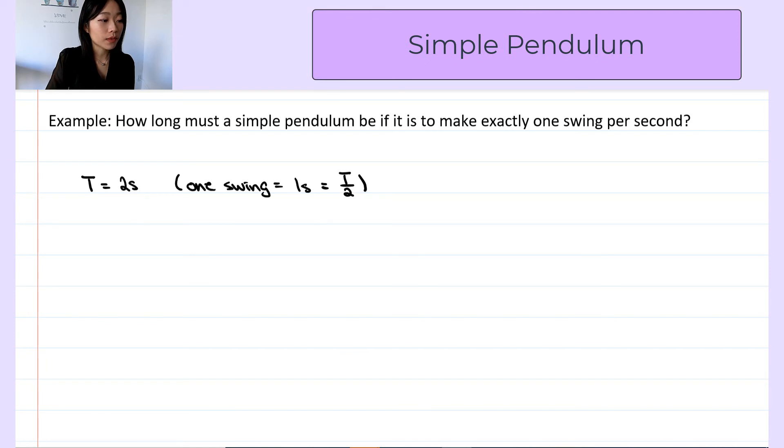And we also learned from the previous lectures that period is two pi over omega. So from here we can solve for omega. We want the angular frequency to be two pi over two seconds, that is pi radians per second.